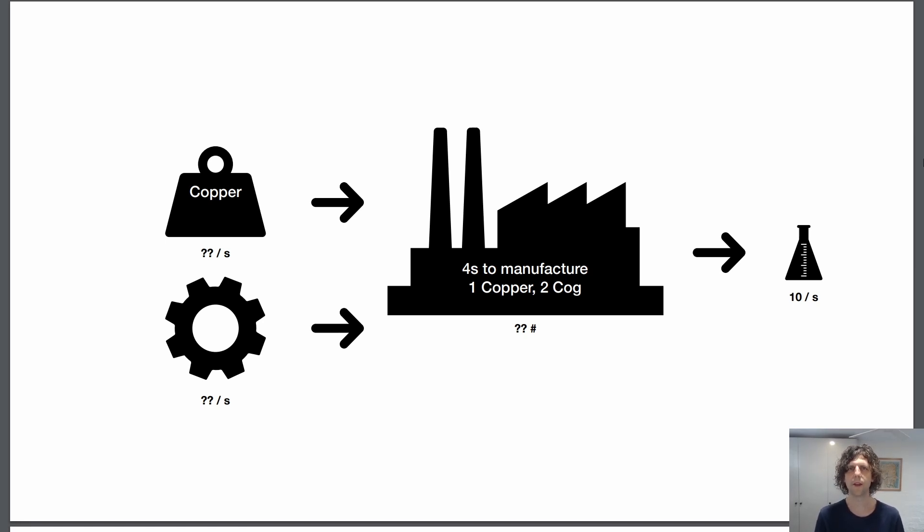So in this case I've got a machine that makes science and I want 10 science per second. How many machines do I need? How much input do I need?